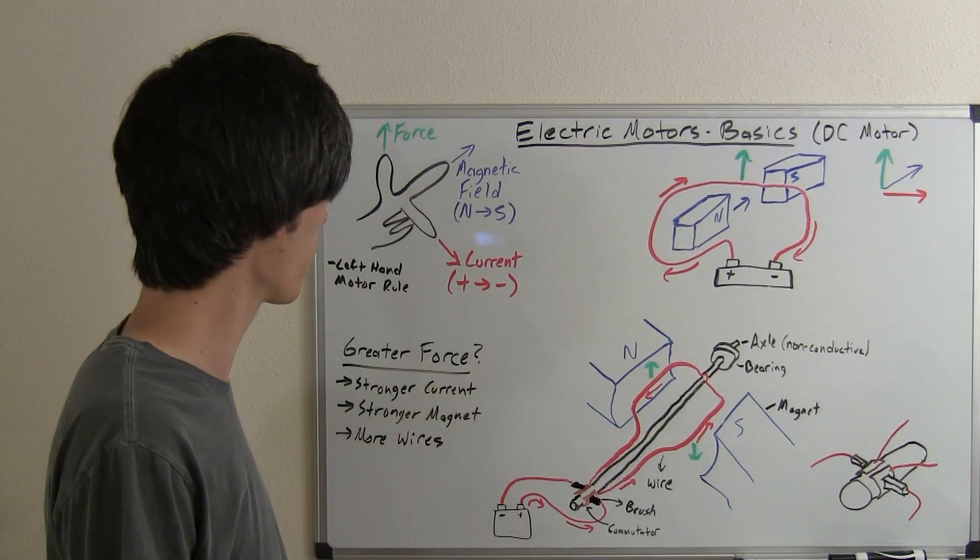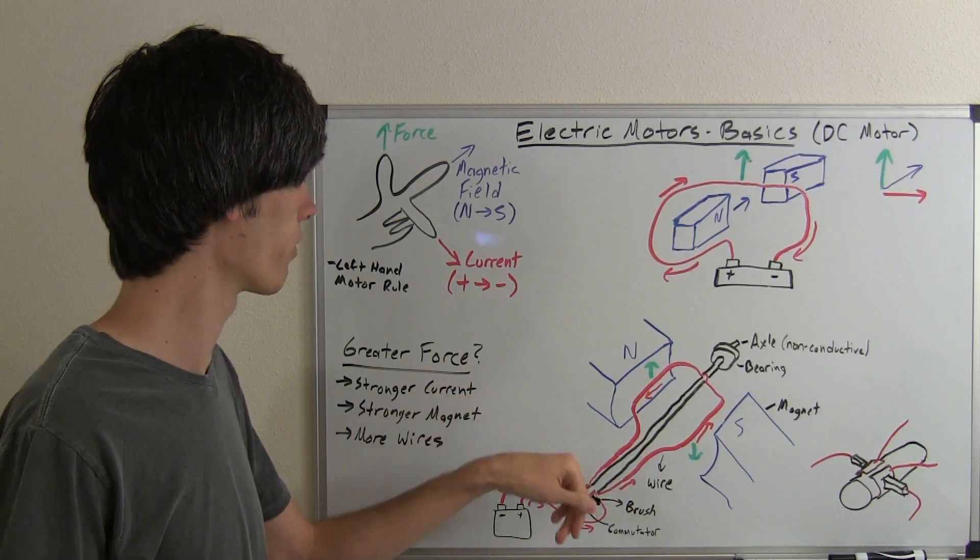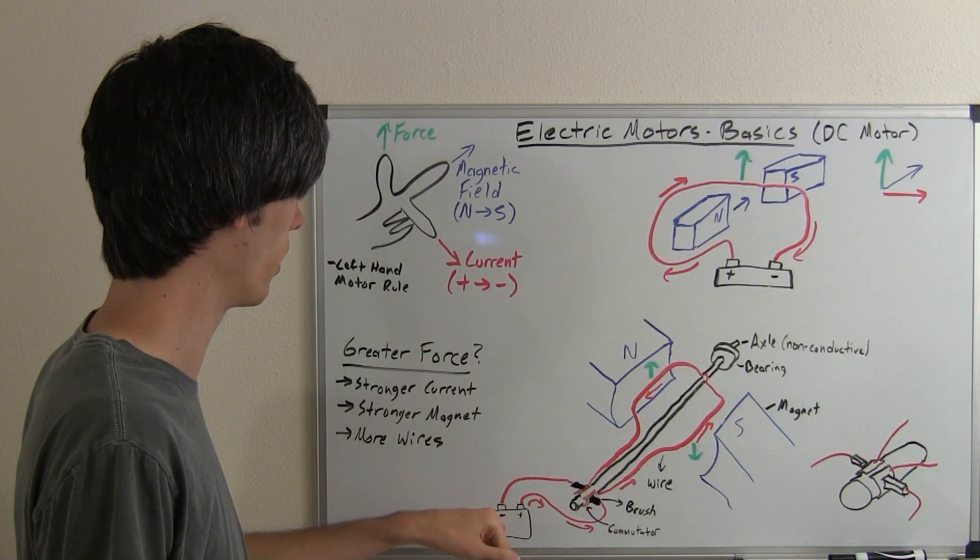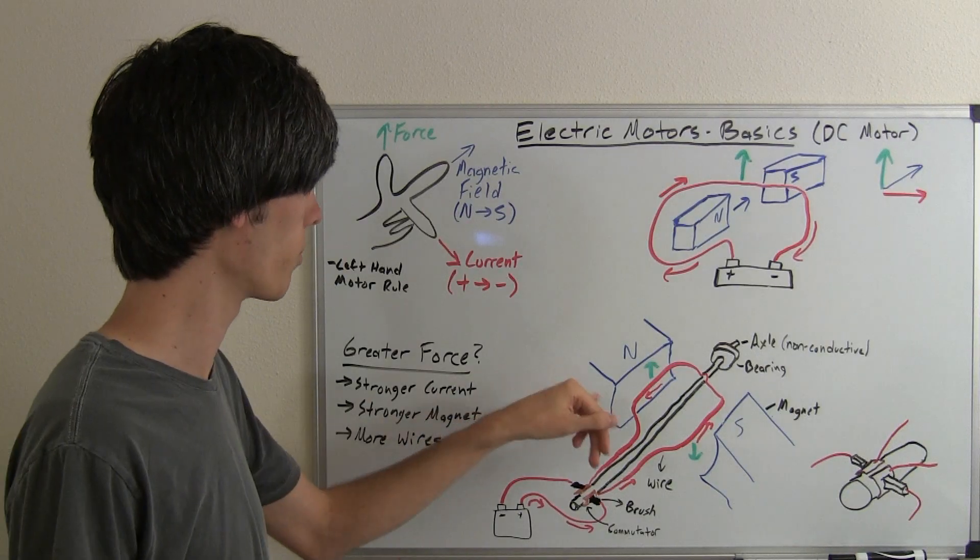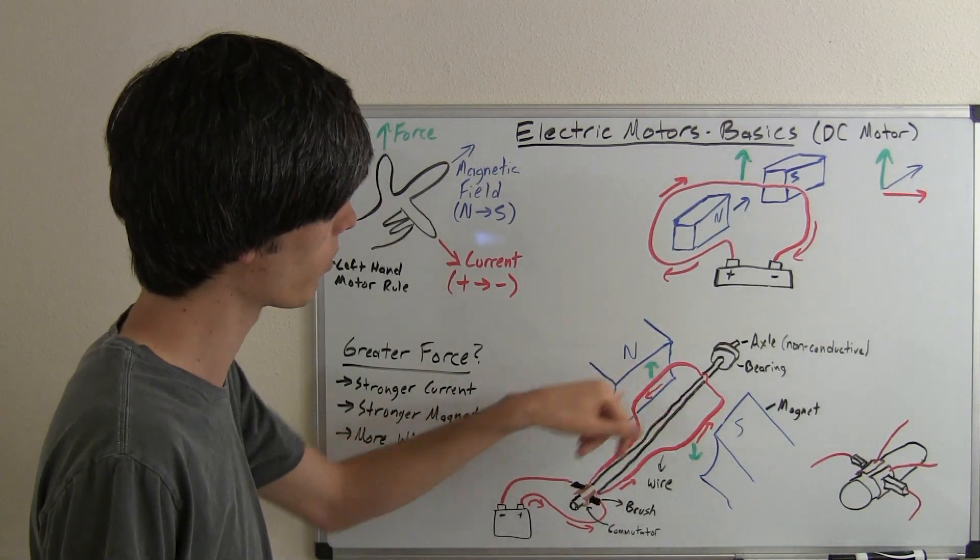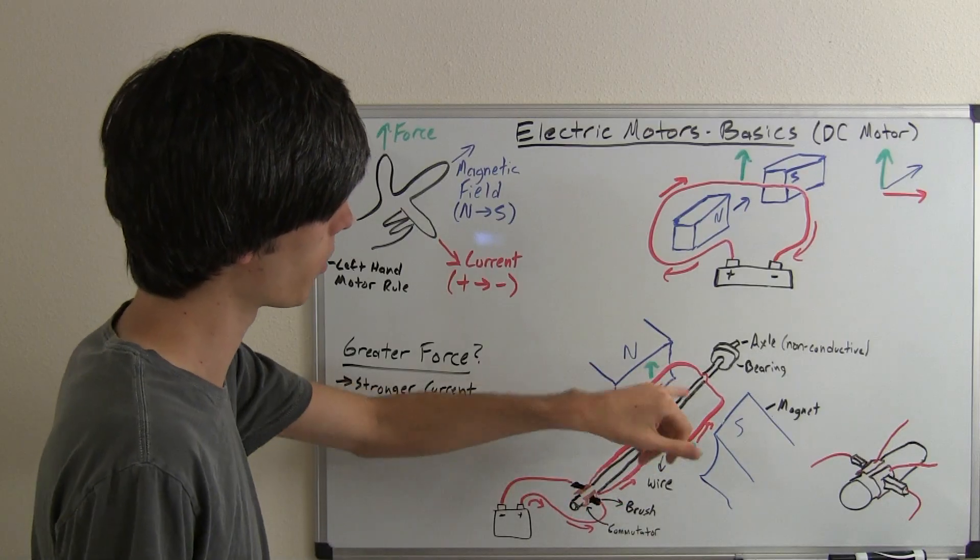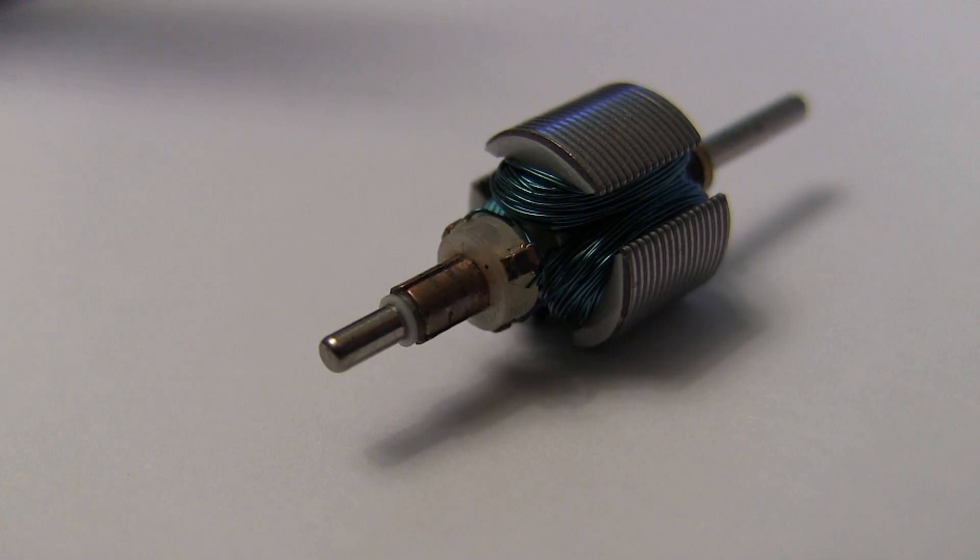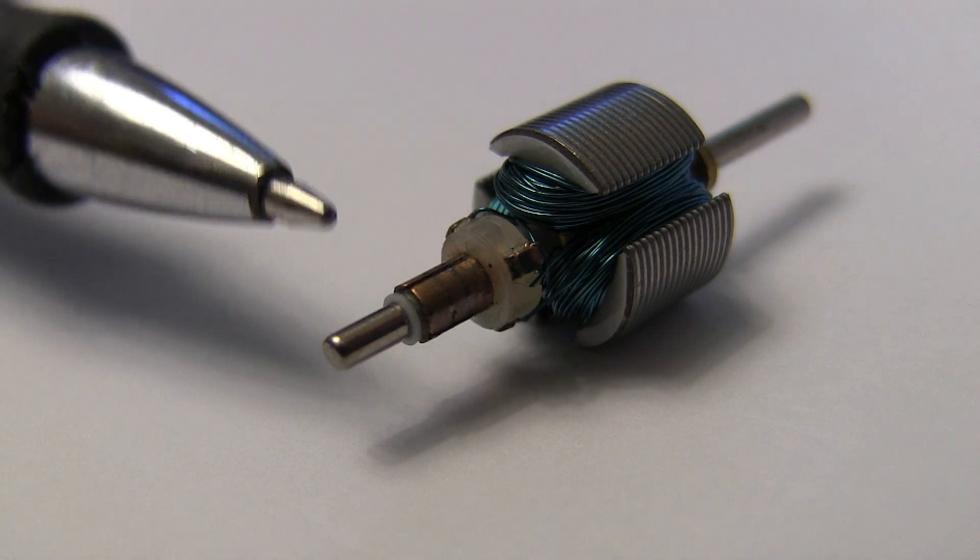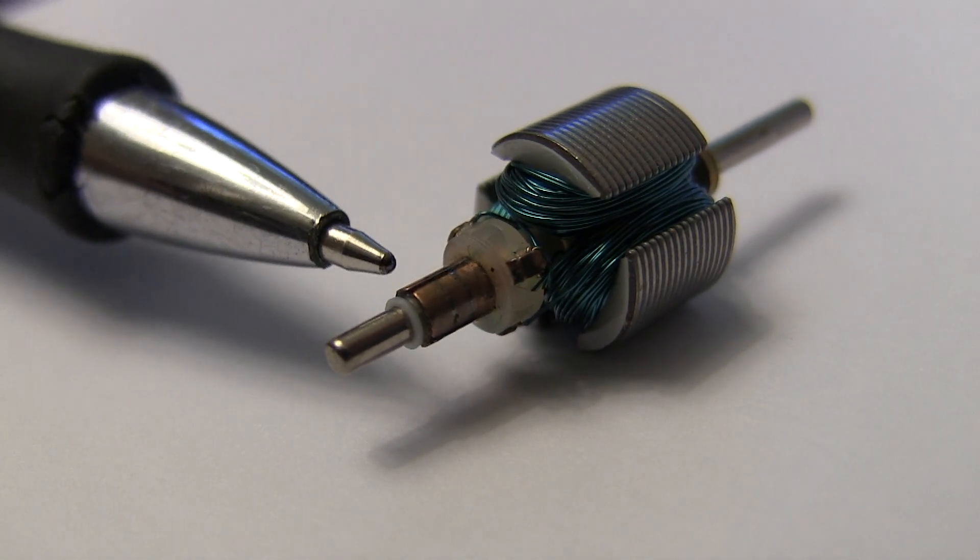So how do you get a greater force there, what I've drawn in green? Well, you can have a stronger current go through, so a stronger energy supply from battery. You could have stronger magnets, or you could have multiple wires. And if you have more wires, each one you're going to kind of multiply that effect of that force on it. So just to get a little bit better idea of what this commutator looks like, you can see the copper piece right there.